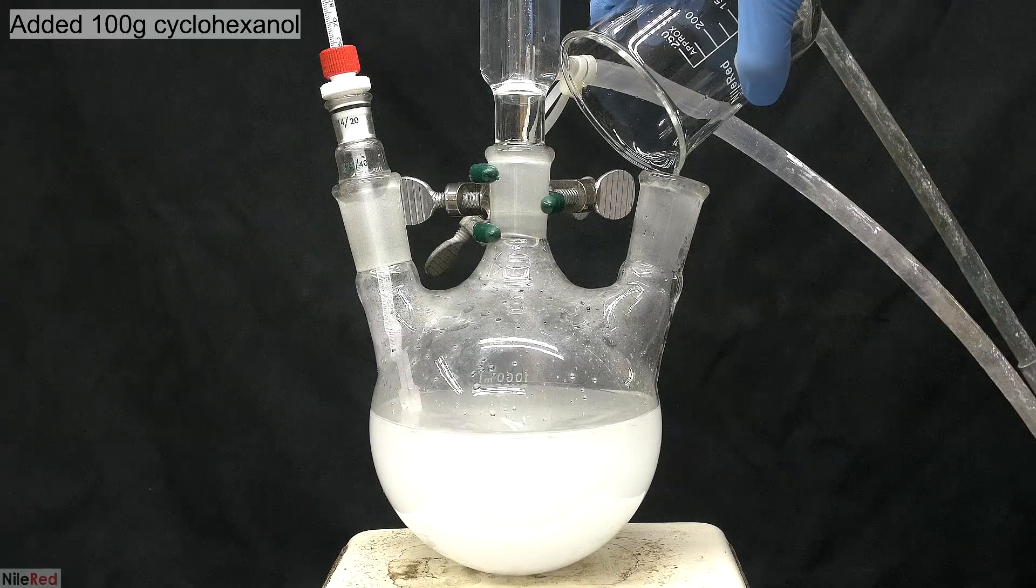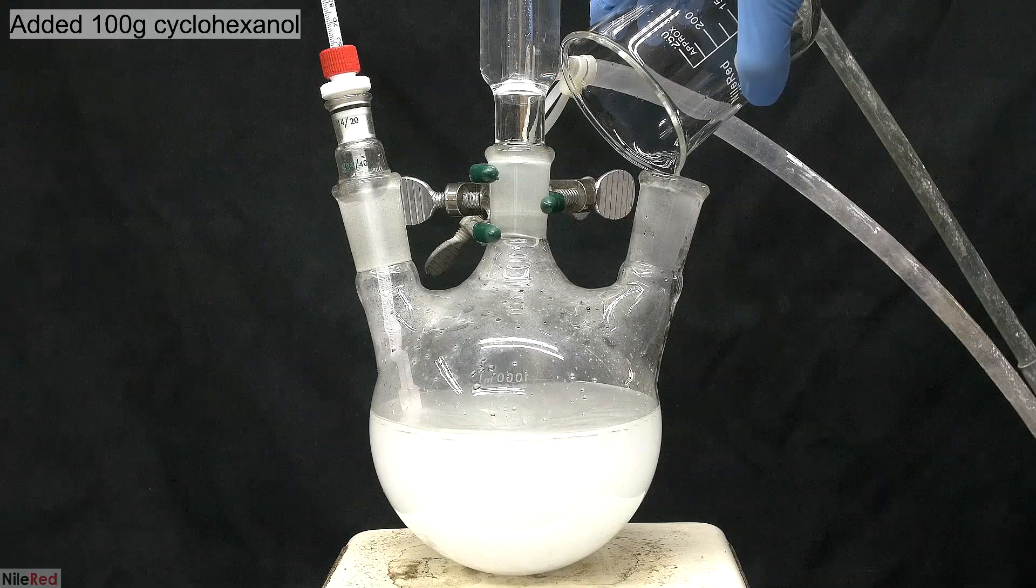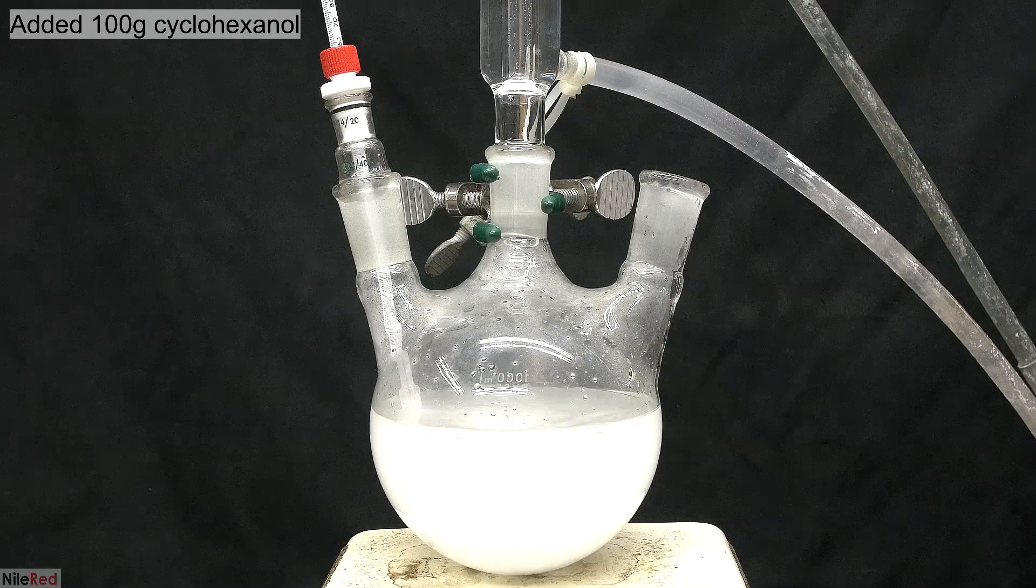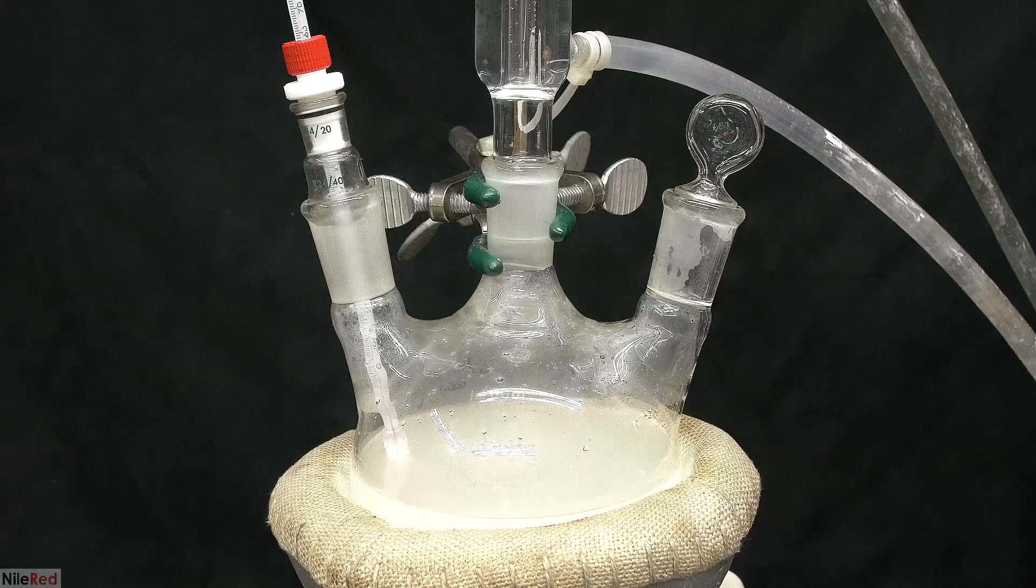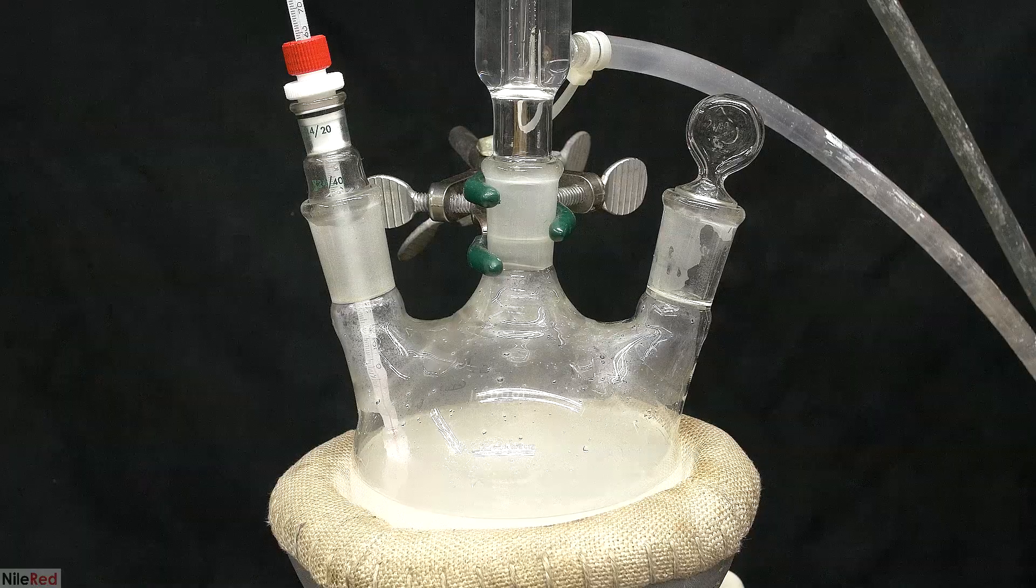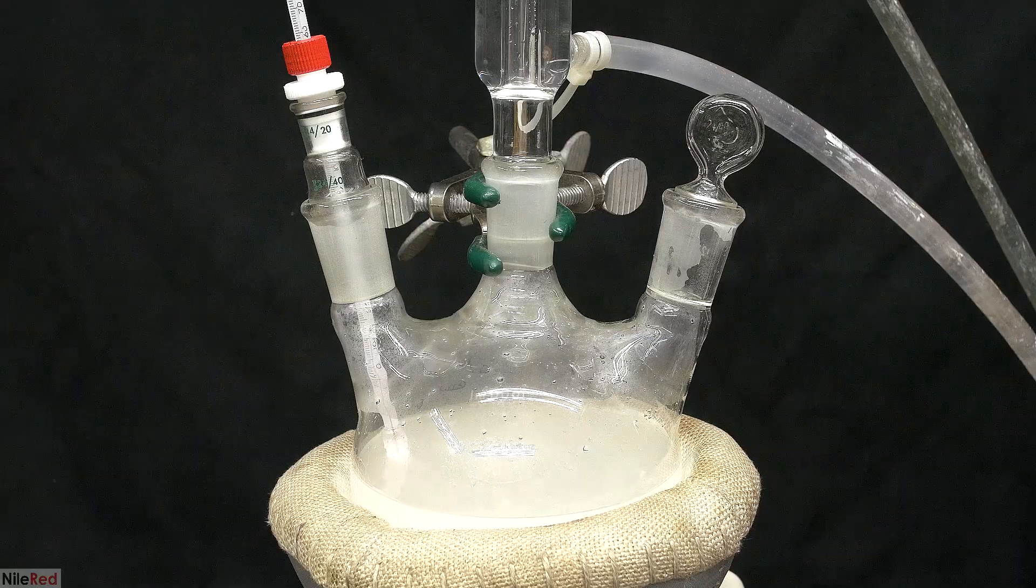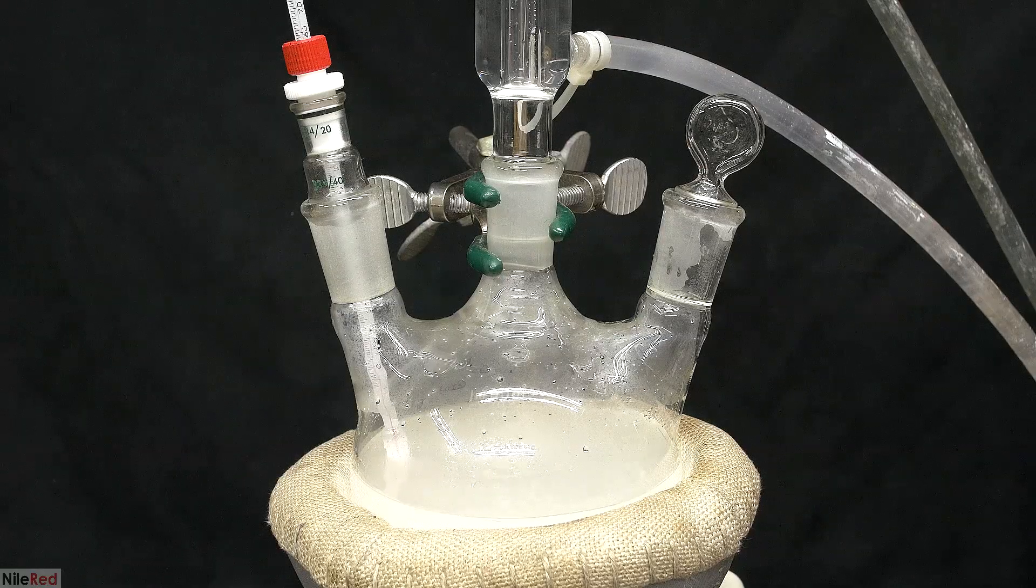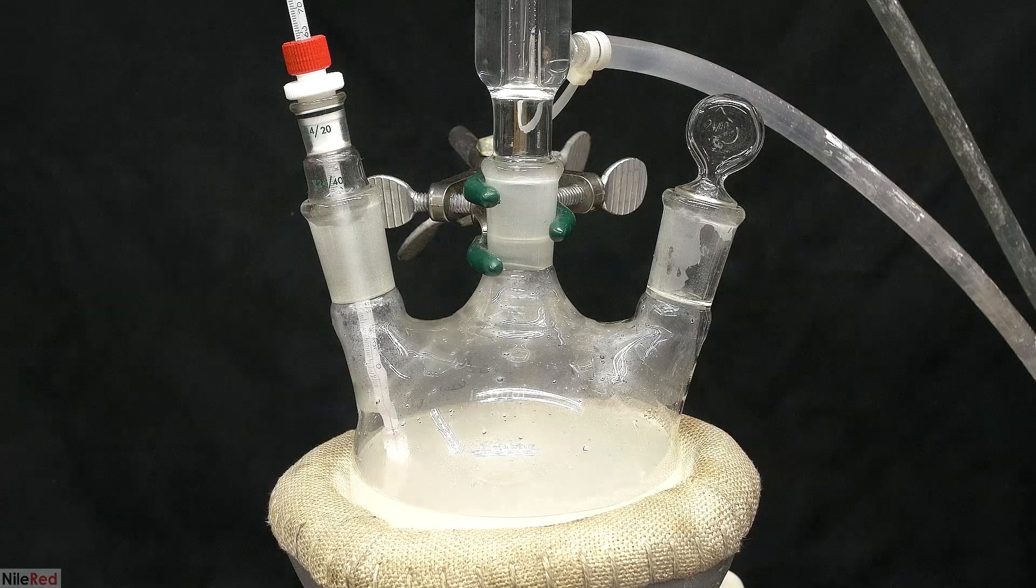If I turned off the stirring, it should clear up, and the cyclohexanol would separate as a layer above the water. The reaction doesn't really happen at room temperature, and to get things going, we need to heat it up. The target temperature is 90C, and I need to hold it there for about 20 hours.